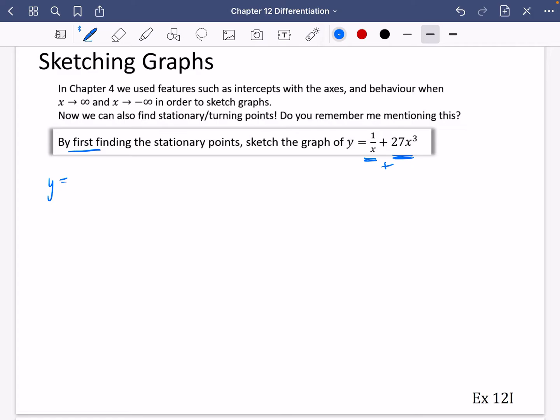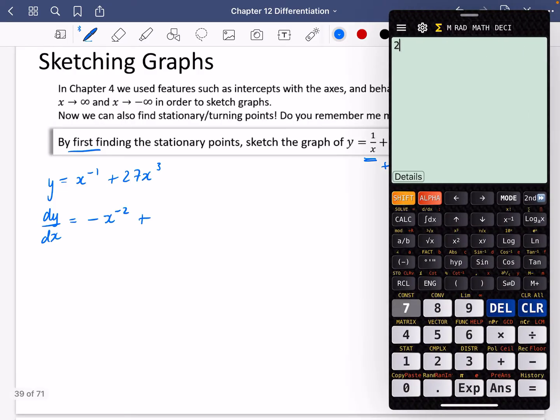So y is equal to 1/x, which is x⁻¹, plus 27x³. So I'm going to differentiate this. I'm going to bring that one down and reduce the power by one. I'm going to do 27 times three, which is 81, and reduce that power by one.